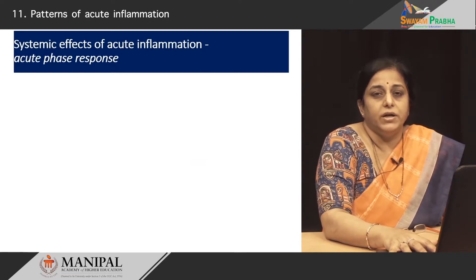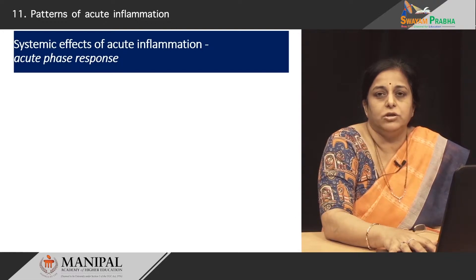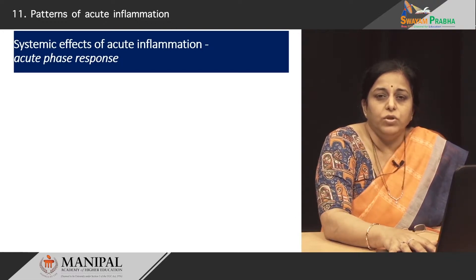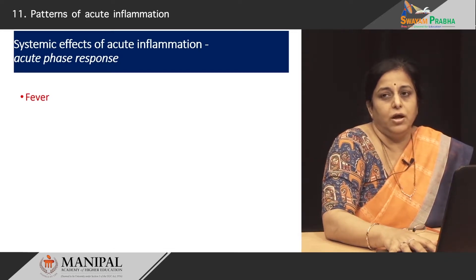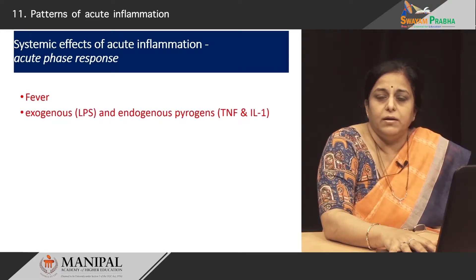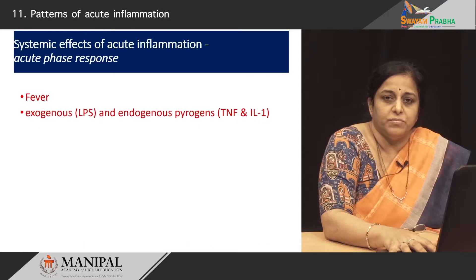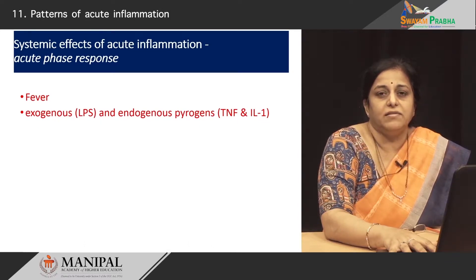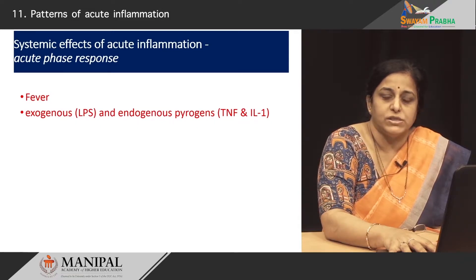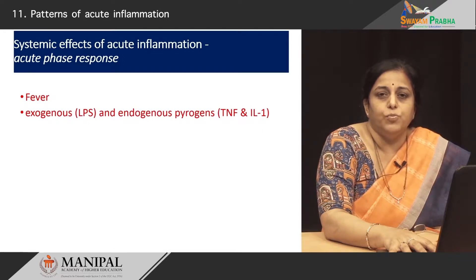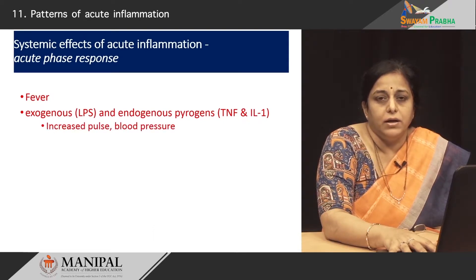Next, coming to another important topic — the systemic effects of acute inflammation, or the acute phase response. We know that when we have a sore throat or an infection in any part of the body, we also get fever. Fever is an important systemic effect of acute inflammation. What causes fever in inflammation? It could be generated by exogenous substances — for example, the lipopolysaccharides of the bacterial cell wall act as pyrogens and increase the temperature. Also, endogenous substances — most importantly the cytokines interleukin-1 and tumor necrosis factor — are endogenous pyrogens. Both exogenous lipopolysaccharides and endogenous pyrogens induce fever.